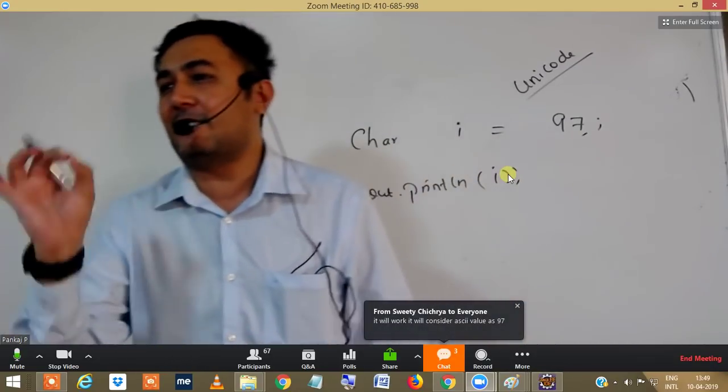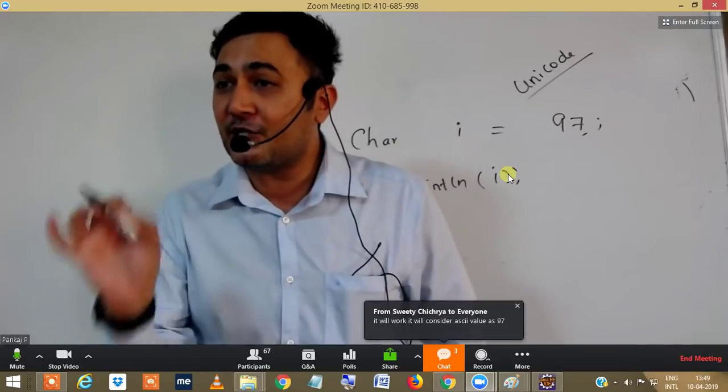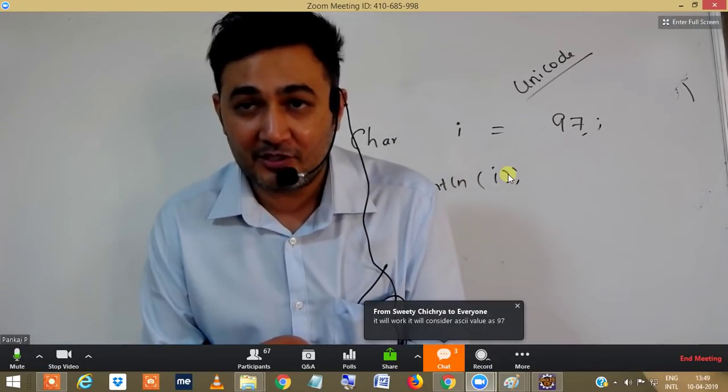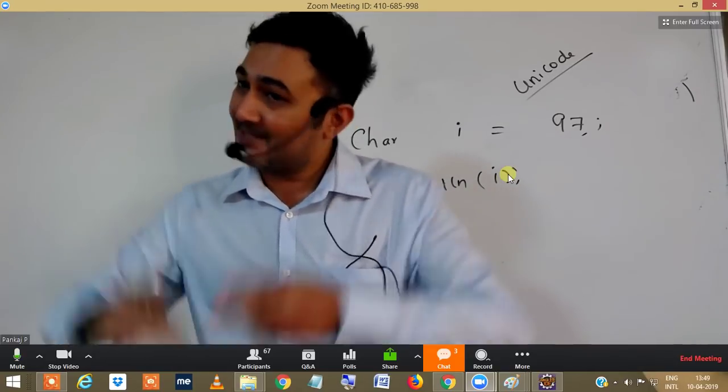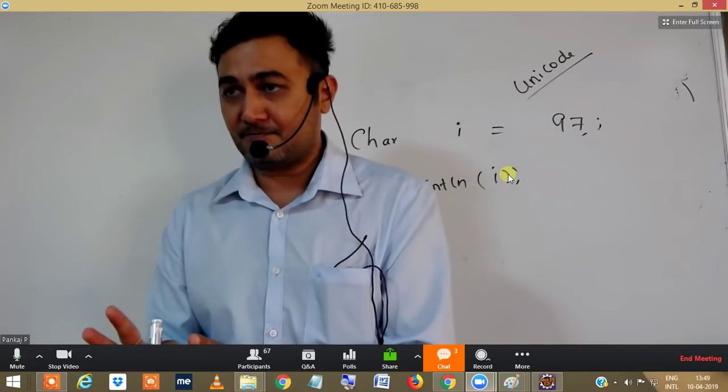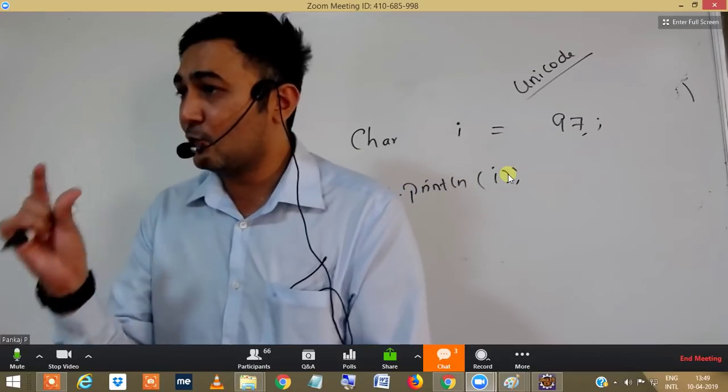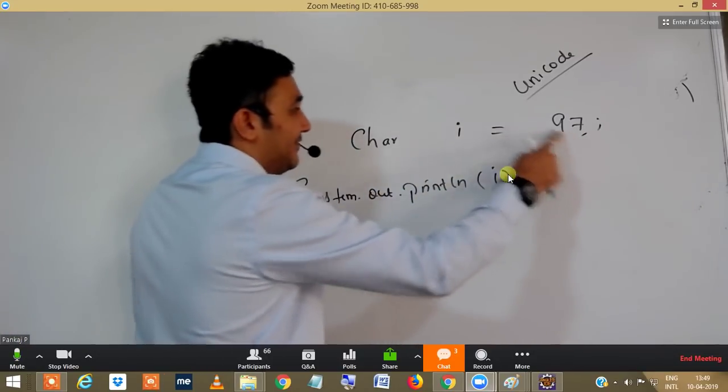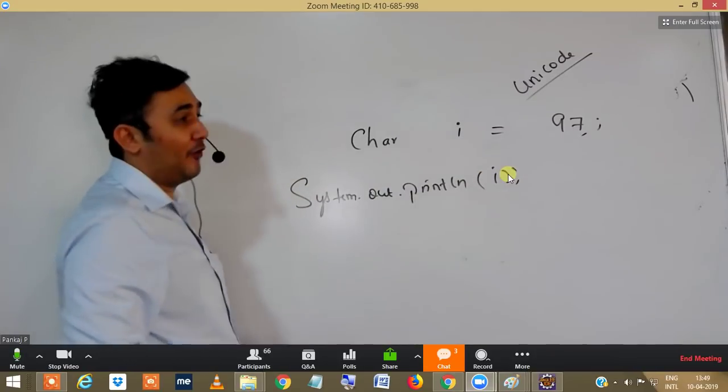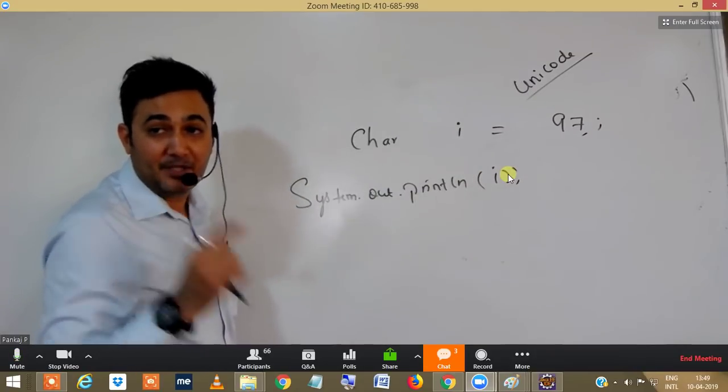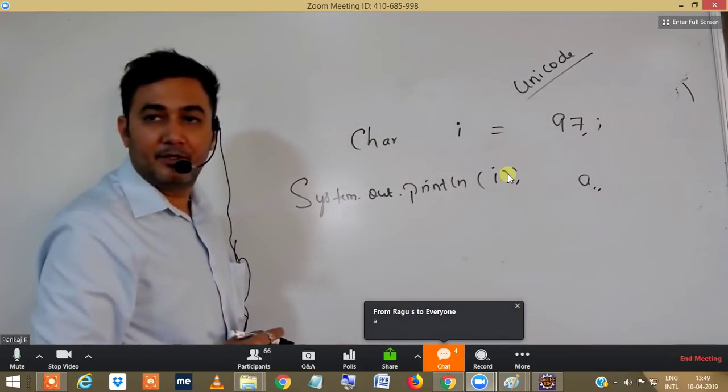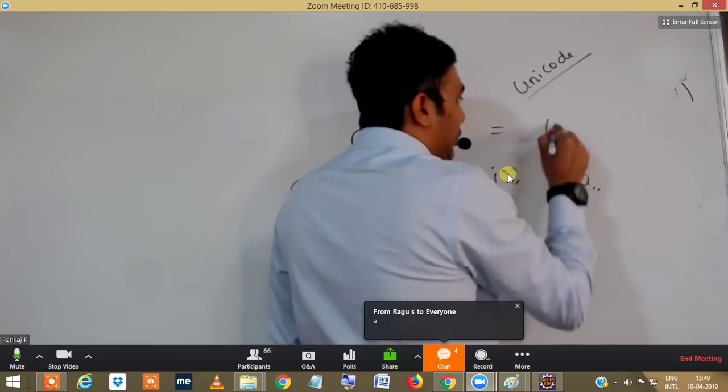But as of now, please understand every letter has a Unicode representation. It might be English alphabets, Hindi letters, any letters, any symbols - there is a Unicode for it. So when I'm storing 97 in i, the Unicode for that is basically 'a', and this would end up printing letter A.